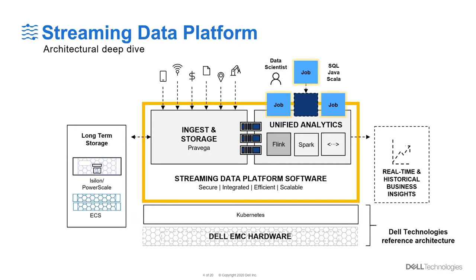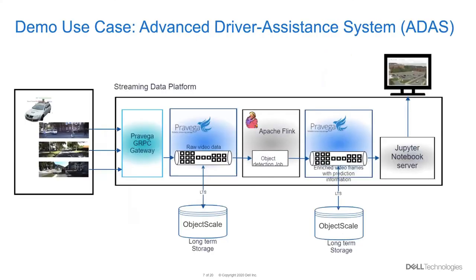Hi everyone. Today I'm going to show you the object detection demo using Streaming Data Platform running on VMware Tanzu. My persona in this demo is a data scientist. I'm part of a team developing an advanced driver assistance system. We continuously collect video and other sensor data from a fleet of test vehicles. There are three stages to this experiment. First, we use the Pravega gRPC connector and Jupyter Notebook to push the video frames into a Pravega stream. The data will be stored in a Pravega stream that I call the raw video.